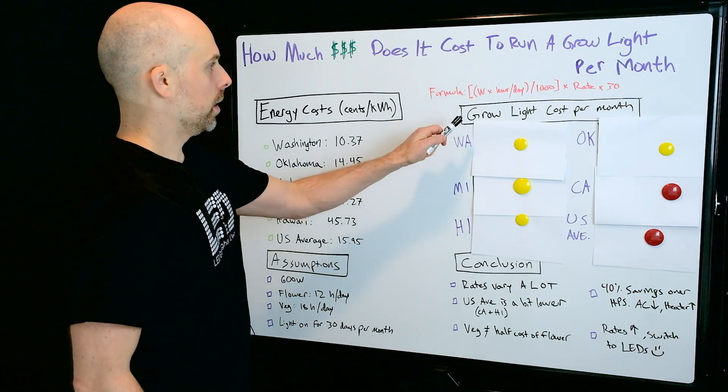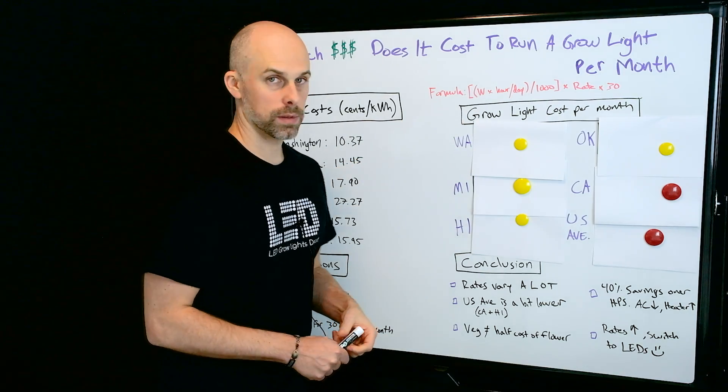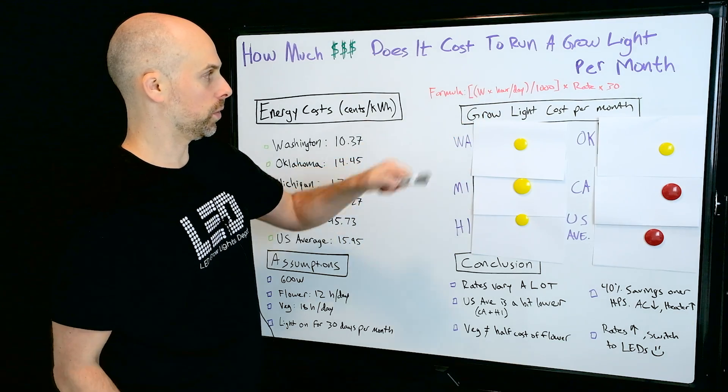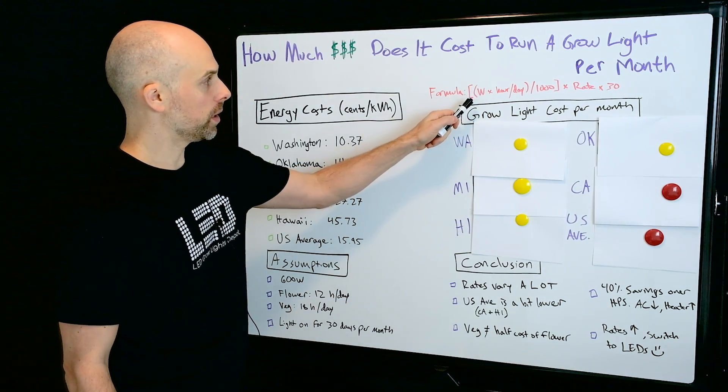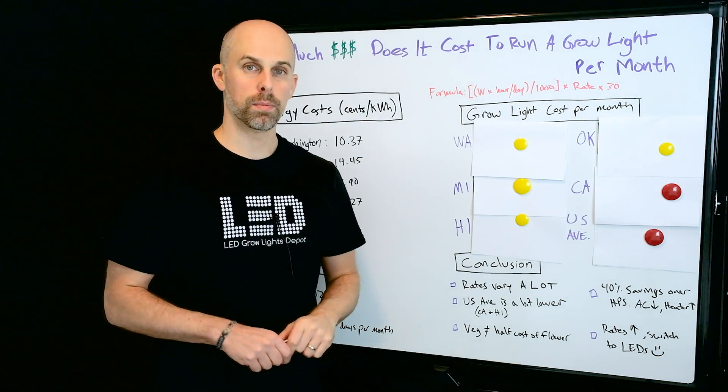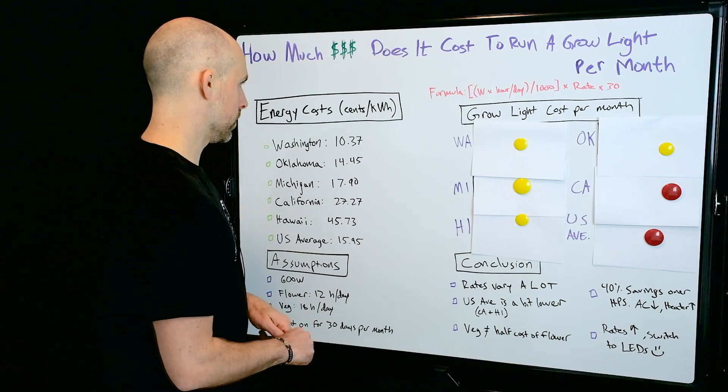To calculate this grow light cost per month, we're going to plug these numbers into a formula here. So this might be a little bit small, so you might not be able to see it too well, but I will go over it for you. The formula is wattage times hours per day divided by 1000 multiplied by the rate times 30.